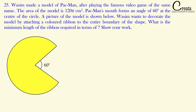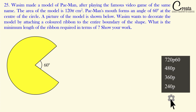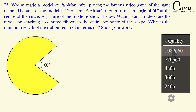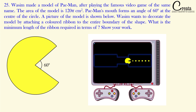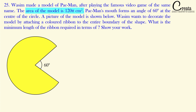This is the next question — observe the question, pause the video and try to solve it on your own. Welcome back. In this question, Washim made a model of Pac-Man, the famous game. The area of the model is 120π centimeter square, meaning the area of this shaded region is 120π cm². The angle of the mouth of the Pac-Man is given as 60 degrees.